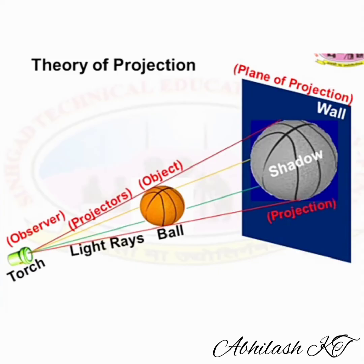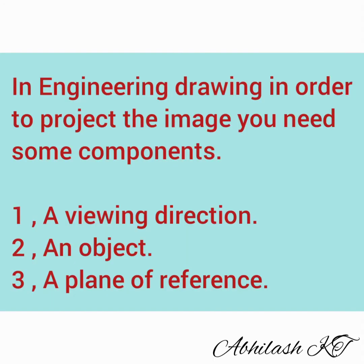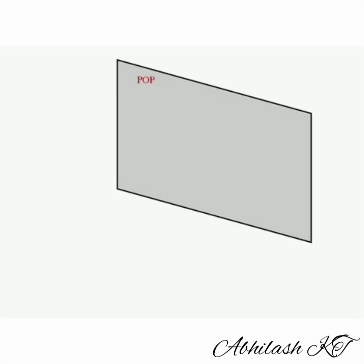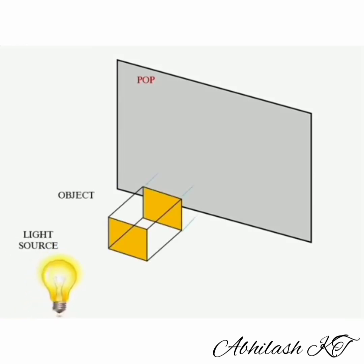Now you all have an idea of what projection is. In engineering drawing, in order to project an image, you need some components: a viewing direction, an object, and a plane of reference. In the projection system, we consider a plane of projection. A 3D object is placed in front of a light source at an infinite distance from the plane of projection.